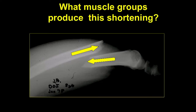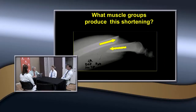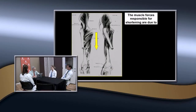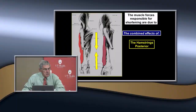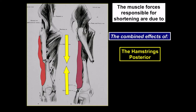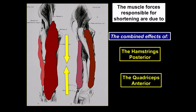Most femoral shaft fractures have shortening. This is caused by a combination of the hamstrings posteriorly — which are two-joint muscles — and the quadriceps. The quadriceps is also a two-joint muscle; it doesn't attach much to the femur itself, but attaches a lot more to the proximal tibia through the patella.